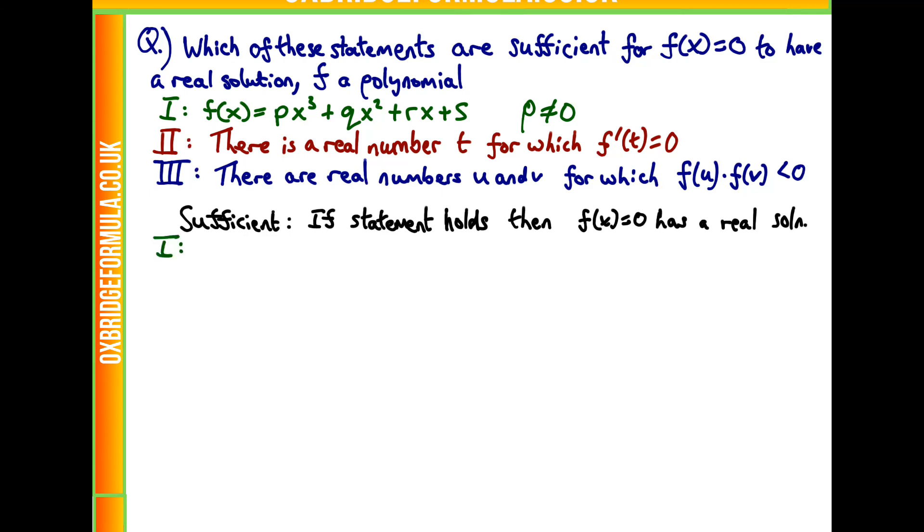So let's look at statement 1 first. What is this thing saying? It's saying it's a cubic polynomial with p≠0 means it must be a cubic and not a quadratic or linear term. So if f is a cubic, what does that mean? It precisely means because it's a cubic, it goes from minus infinity to infinity or the other way around.